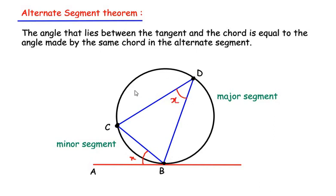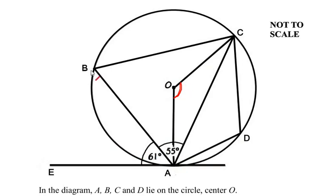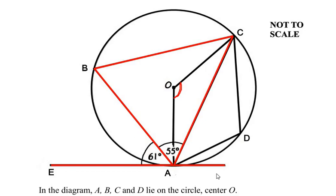This also holds true for the other chord. Chord BD divides the circle into two segments: if BD makes an angle y with the tangent in the minor segment, then the same chord makes angle y in the alternate major segment. Now applying this to our example: considering chord AB and tangent EA, the chord makes an angle of 61 degrees in the minor segment, so the same chord makes an angle at point C in the major segment, meaning angle C is also 61 degrees by the alternate segment theorem.